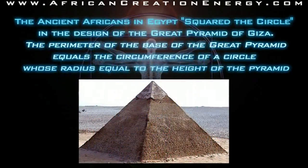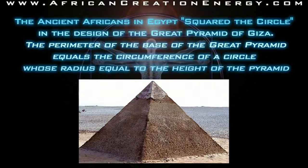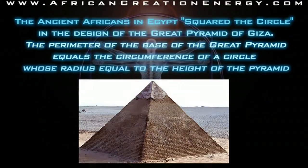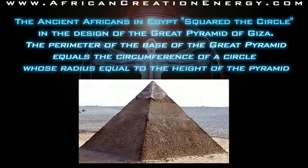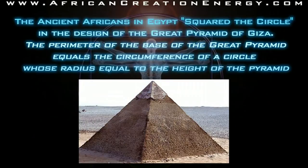Now what's interesting is that the ancient Africans in Egypt squared the circle in the design of the Great Pyramid of Giza. The perimeter of the base of the Great Pyramid equals the circumference of a circle whose radius is equal to the height of the pyramid. Now let's analyze that statement so you can see what I mean.